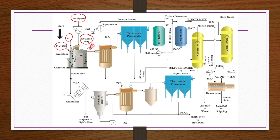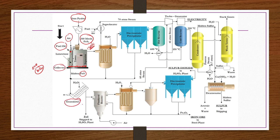The FeS or pyrotite liquid droplets are collected at the bottom in liquid form. If the ore contains silica, it is flushed out using limestone or lime solutions, since silica floats on top of the molten FeS. After flushing out the silica, the molten FeS is collected from collectors and sent to a granulator where it is granulated to approximately 4 mm size.